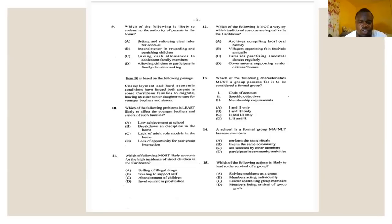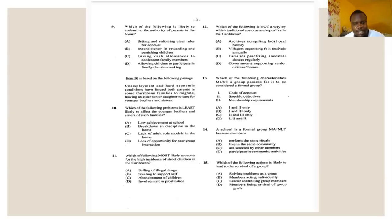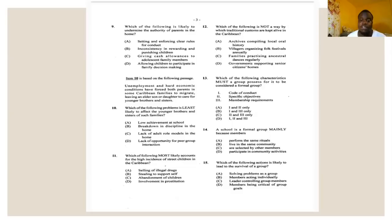Number eleven says: which of the following most likely accounts for the high incidence of street children in the Caribbean? A: selling illegal drugs, B: stealing to support self, C: abandonment of children, or D: involvement in prostitution. Selling drugs or stealing — they can do both and still live at home. Abandonment of children means parents left them or kicked them out, making them actually live on the street. The answer for number eleven is C — abandonment of children.